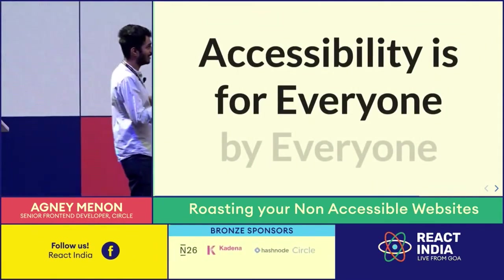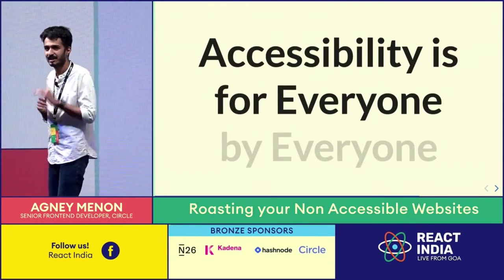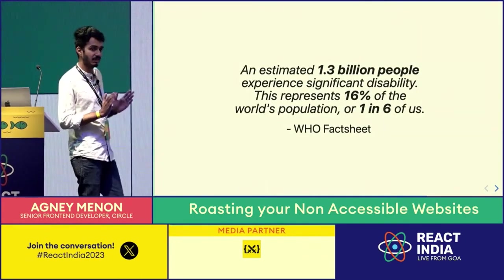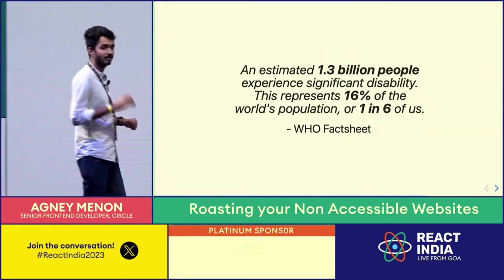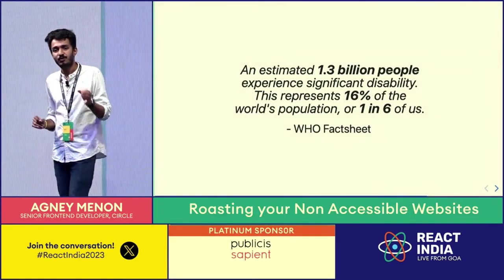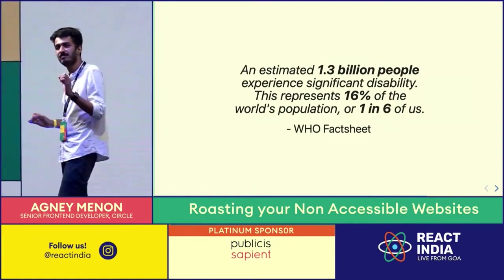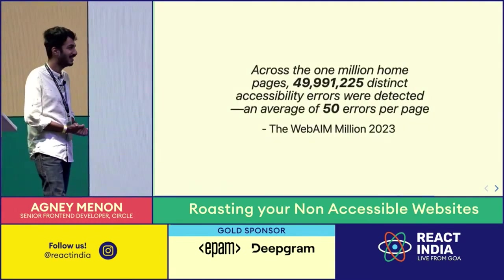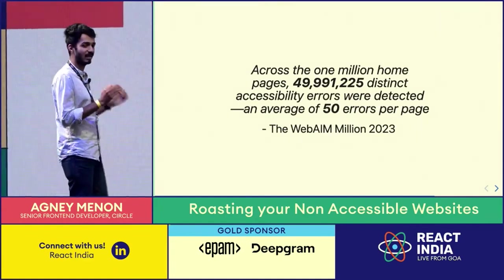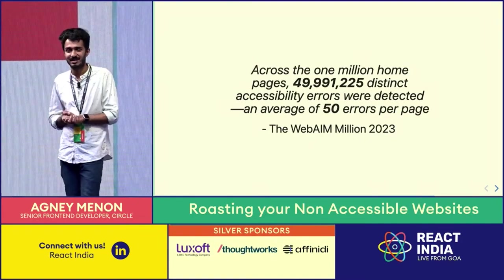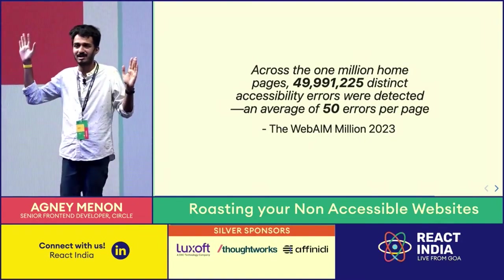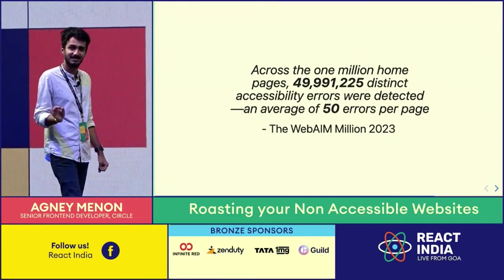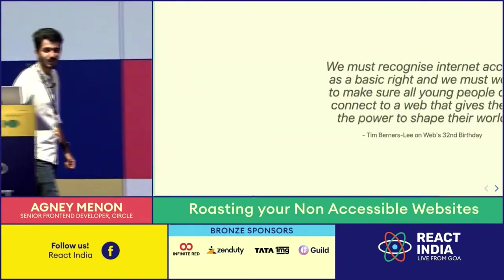Now it's time to come to the first point: accessibility is for everyone. Who are we building this for and why? According to WHO, there are 1.3 billion people who have a significant disability — that's one in every six of us. You'd think we must be pretty good at implementing accessible features. Turns out, no. There are 50 crore distinct errors on the top 1 million web pages. On average, that is 50 errors per page. We are not doing good at this.